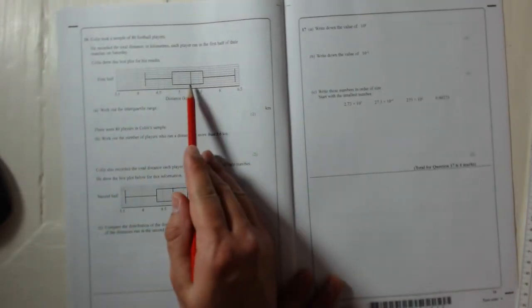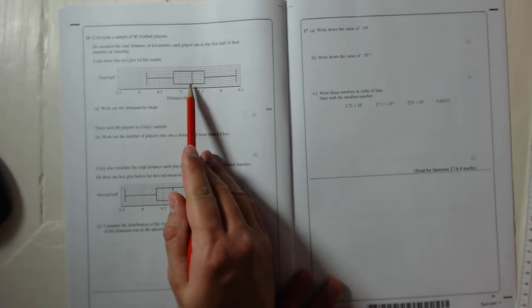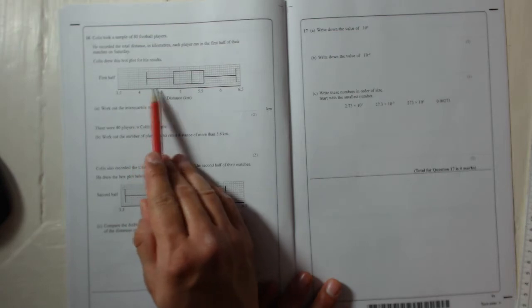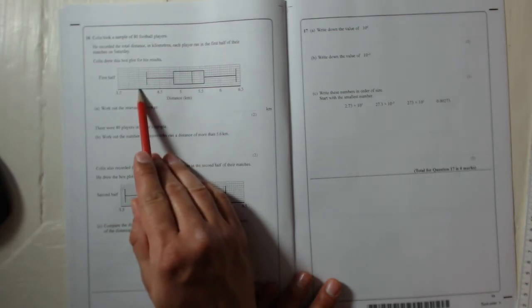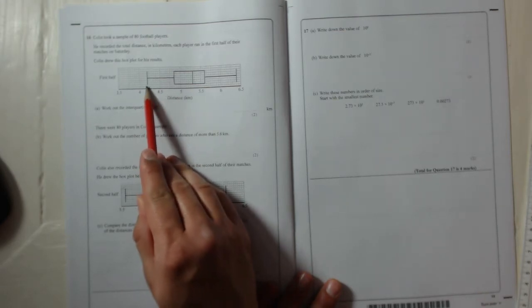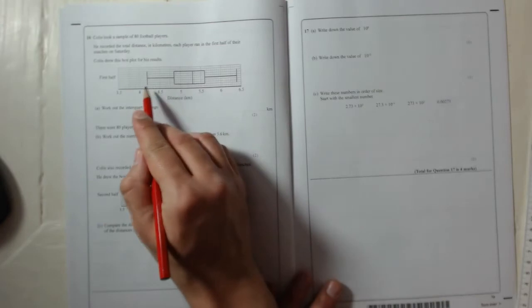Now, just so you know, a box plot has a few pieces of information on it. It's got the lowest amount, so this is the lowest distance anyone ran. If you look, you've got 4 to 4.5, so every two squares is 0.1. So that's 4.1, 4.2, 4.3, 4.4, 4.5. So that number there is 4.2.